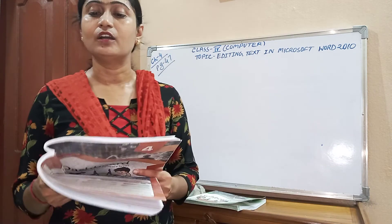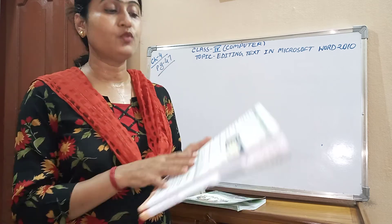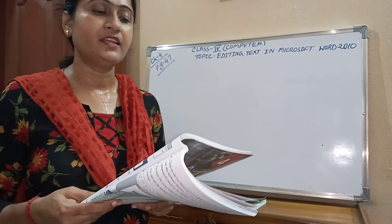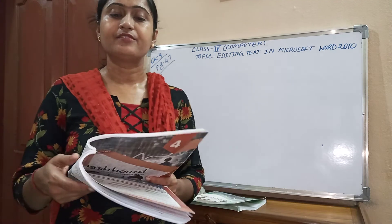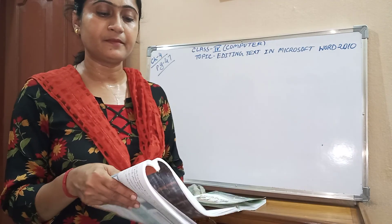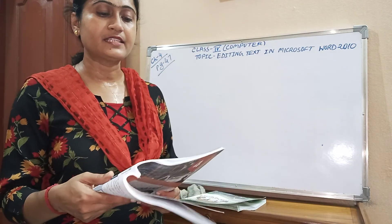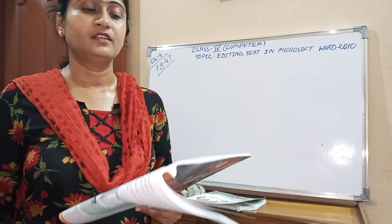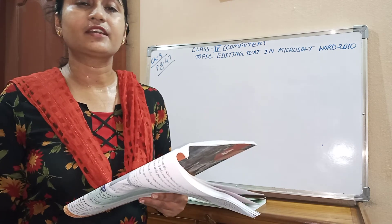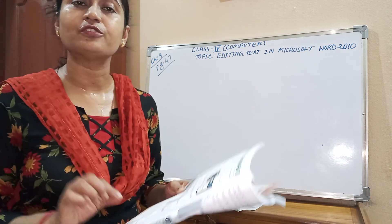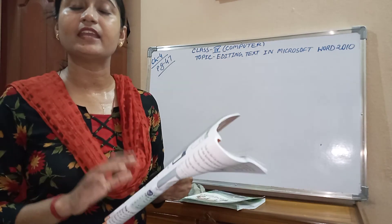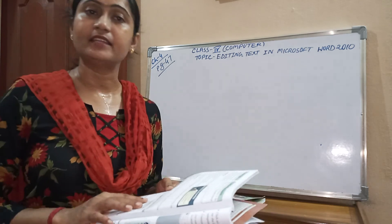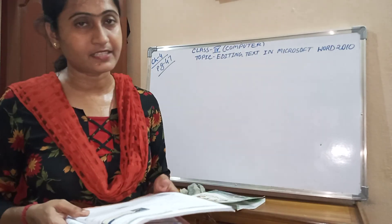To select the whole document, you can triple-click the left mouse button in the selection area, or use the keyboard shortcut Control + A. When you press Control and A together, the whole document will be selected.